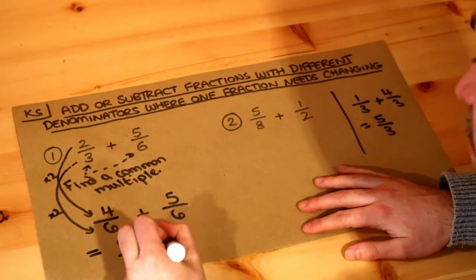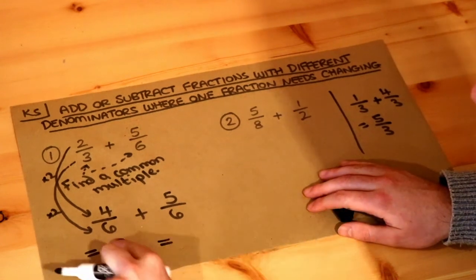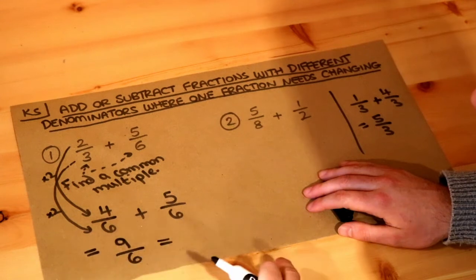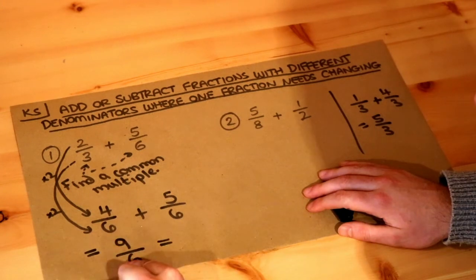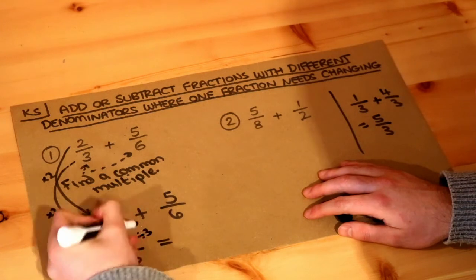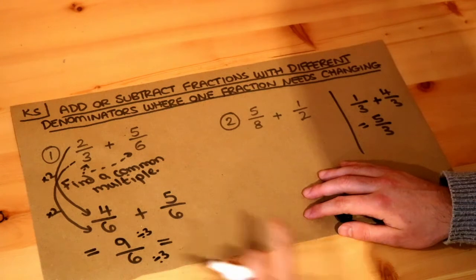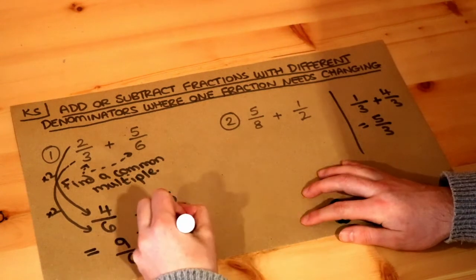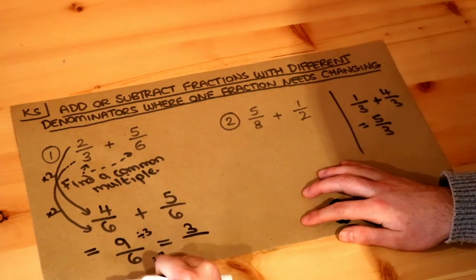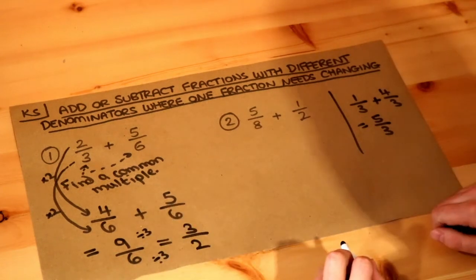Now nine sixths we could simplify. Remember I said we can divide or multiply the top of the fraction by anything we like as long as we do the same to the bottom. Can you see nine and six? They're both in the three times table. We could divide the top and bottom of the fraction by three. Nine divided by three is three and six divided by three is two. So that is the final answer, three over two.